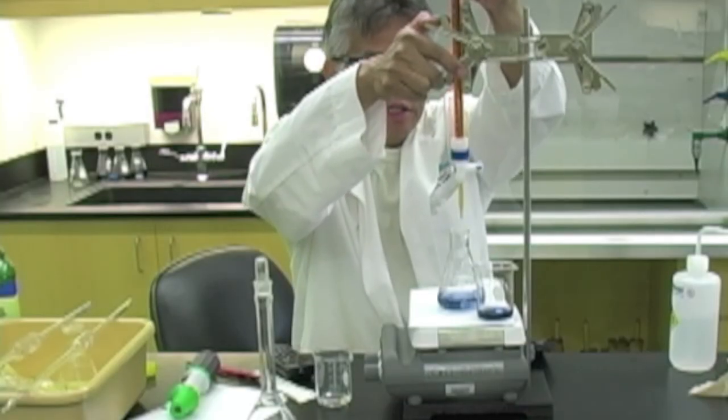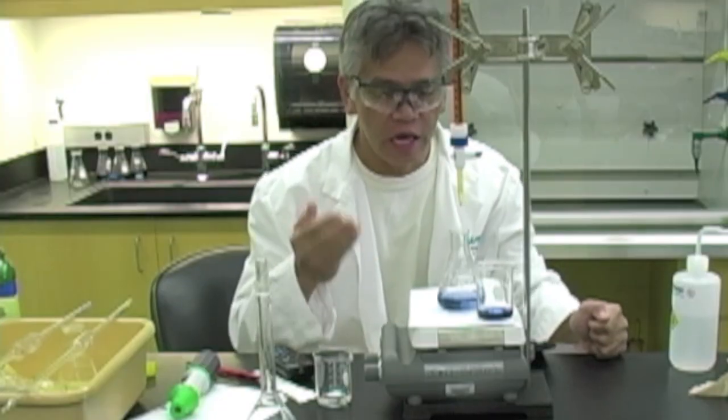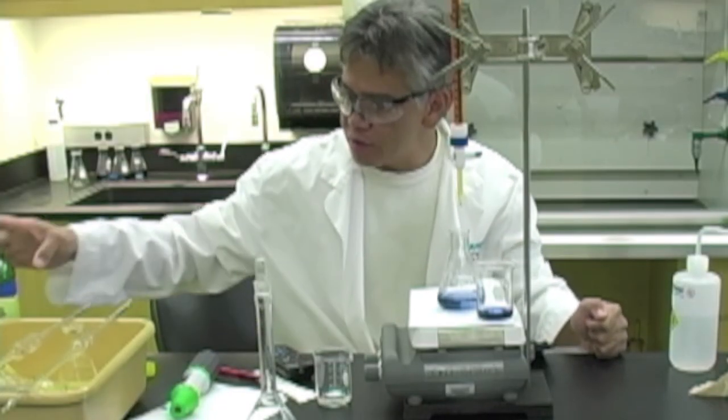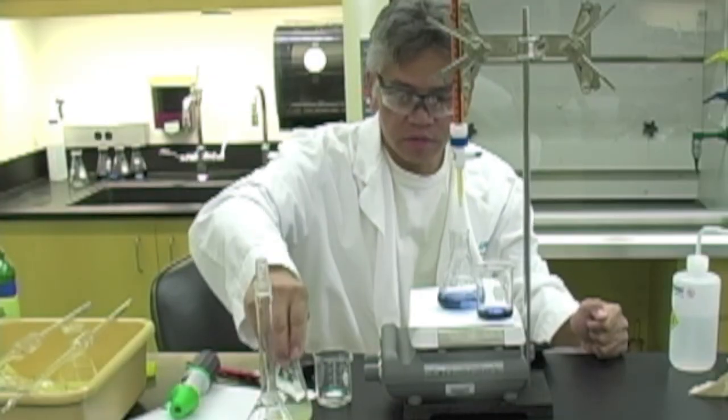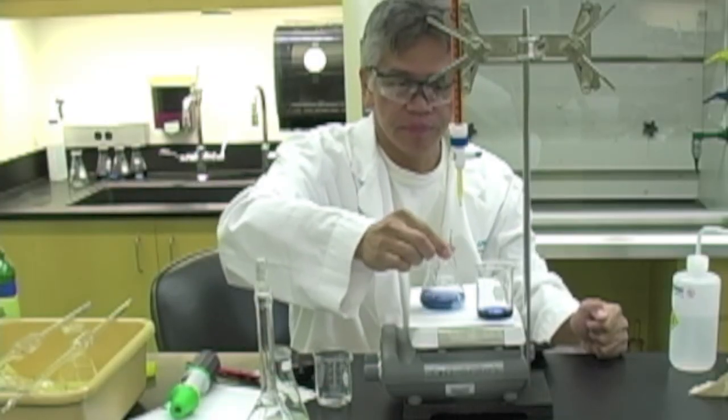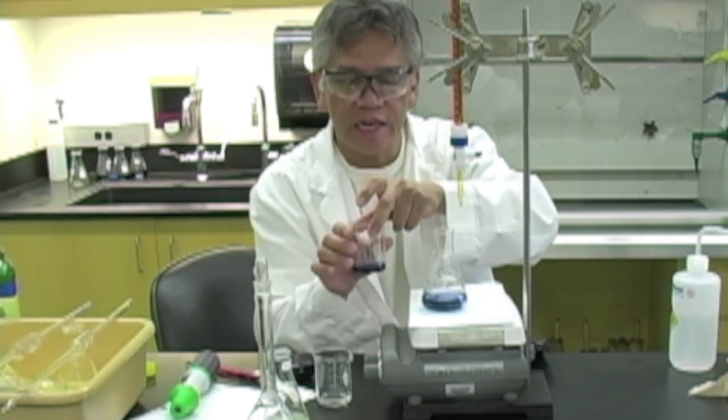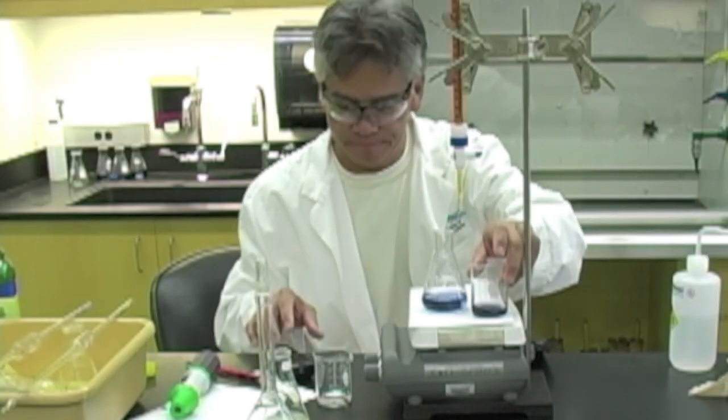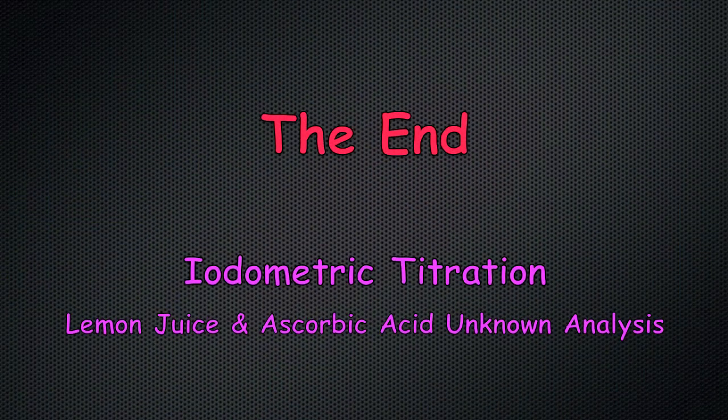This is the technique you would use to titrate ascorbic acid. First the lemon juice, known solution, and then your unknown. The endpoints were different for the two samples and it always helps to do a pre-titration to get an idea of what the endpoint looks like.